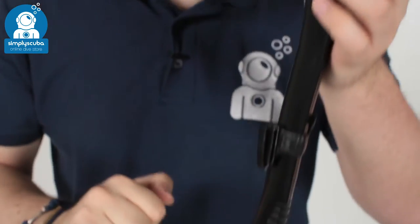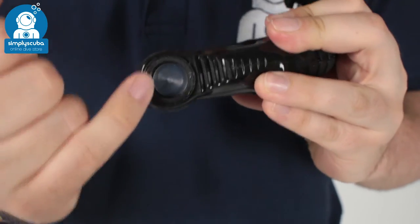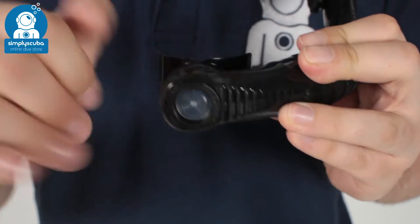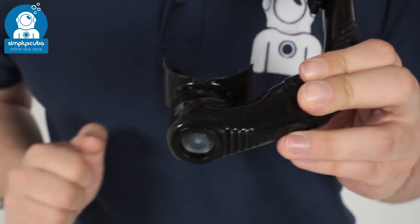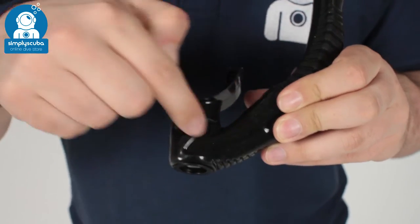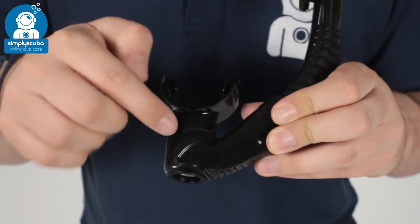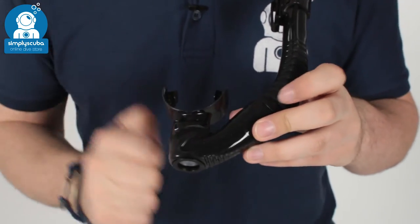If any water does enter the tube, it's going to get caught in this little trap here, which has a one-way valve, so every time you exhale, it's going to push all the water out of the bottom, so you've got a clean airway. Even if you do have a bit of water in the bottom, you've still got enough space to get some air through there without inhaling all the water, so that's very helpful with the water trap.